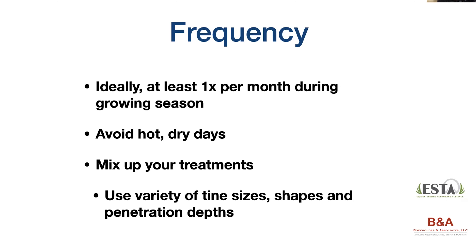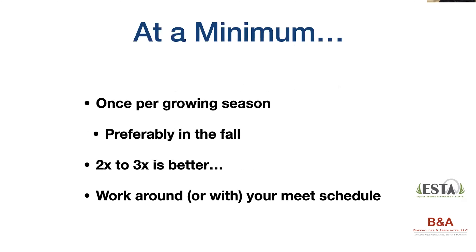Use a variety of tine shapes, sizes, and penetration depths. If you airify all the time at the same exact depth with the same machine, you run the real risk of creating a hard pan in the soil. For instance, if you're always going out with a four-inch long core aeration tine, at the bottom of those four inches — if you keep doing that consistently year after year — you can create a hard pan four inches in the soil, which will then create problems for water infiltration. Mix it up to avoid that, whether by changing tine depths or the type of machinery.